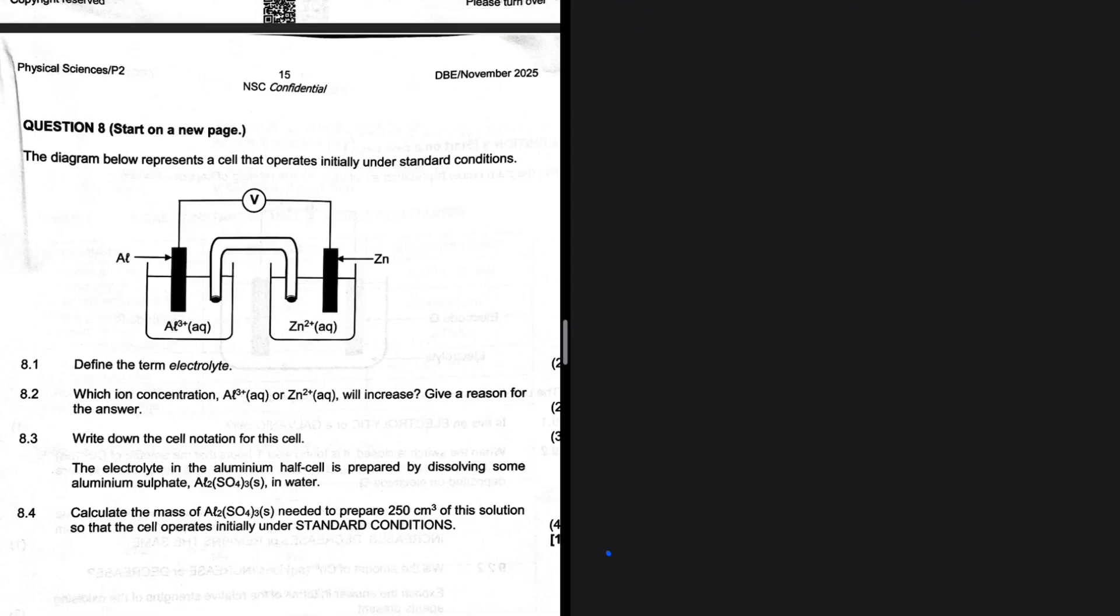So first things first, we need to determine what is the anode and what is the cathode using our table of standard reduction potentials. So you should realize that aluminum is at the anode, and then zinc is at the cathode.